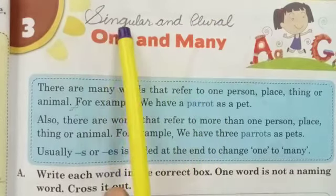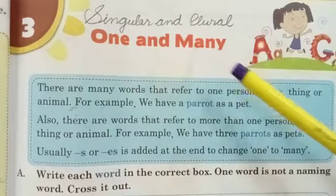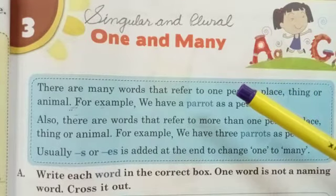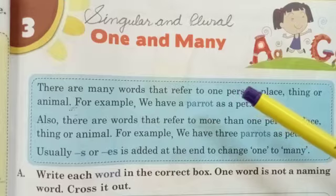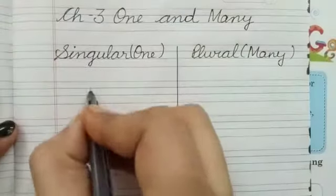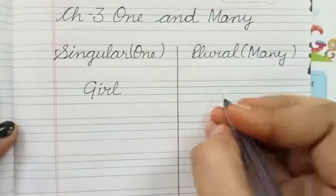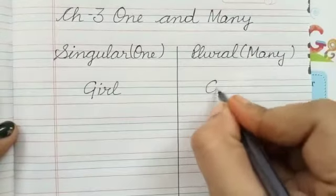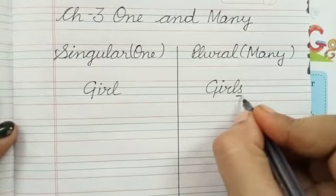Singular means one, plural means many. By changing from singular to plural, we generally add S to the end of the word. For example, girl — girls, add S.